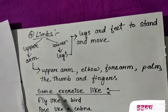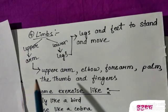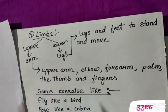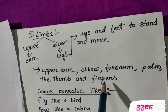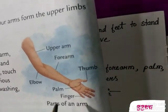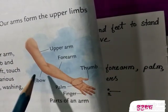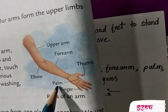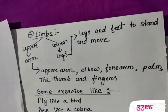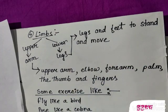Next comes the limbs. Limbs are divided into two parts: upper limbs and lower limbs. The upper limb is the arm, and the lower limb is the legs. The upper limb includes the upper arm, elbow, forearm, palm, thumb, and fingers. With the help of legs we can stand, move, walk, run, jump, and dance.